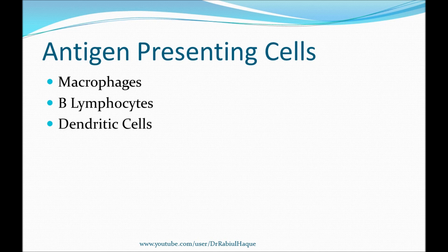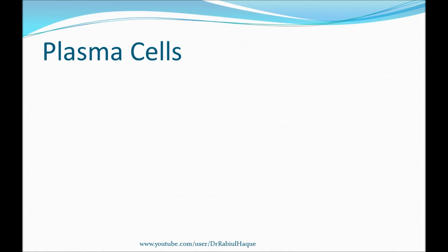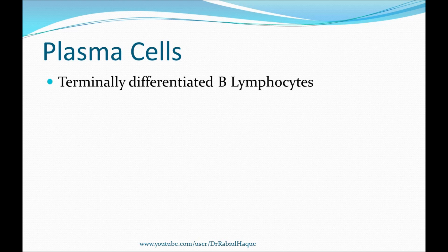The next cell type is plasma cell. Plasma cells are terminally differentiated B lymphocytes. They produce antibodies directed against foreign antigens or against altered tissue components.